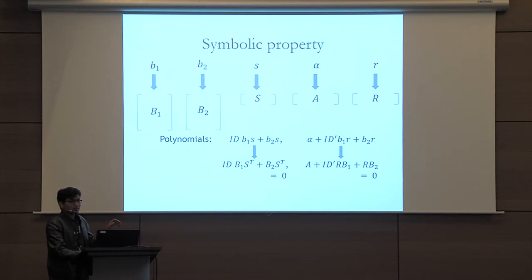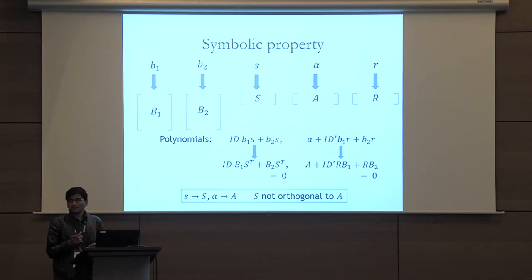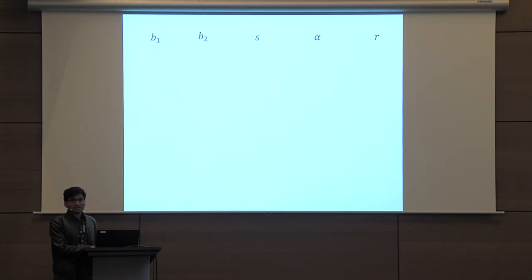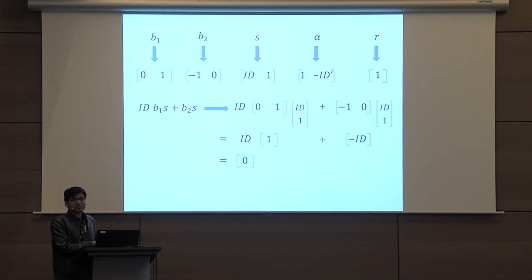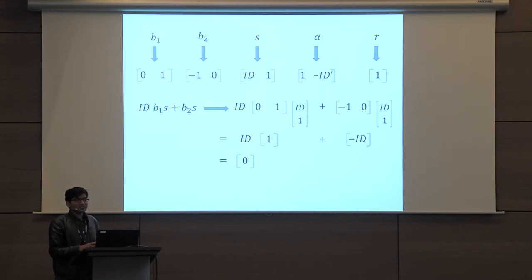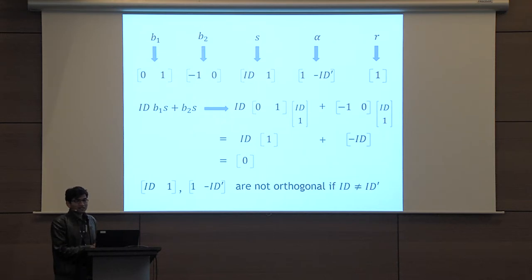What prevents me from setting all the matrices and vectors to just the zero vector? This extra constraint: for the two special variables s and alpha, the vectors corresponding to them should not be orthogonal to each other. So what is the mapping in this particular case? It's actually easy to figure out — here is one example, it doesn't even require two dimensions. When we substitute these vectors into the first polynomial, we get an expression that simplifies to the zero vector. Similarly, when you substitute these vectors into the second polynomial, you again get zero. It's also easy to see that the vectors for s and alpha are not orthogonal to each other if the predicate is false, which means id is not equal to id'.